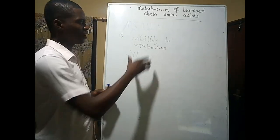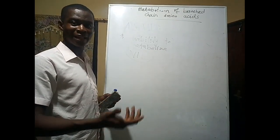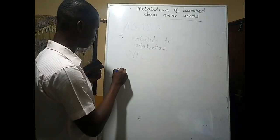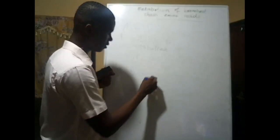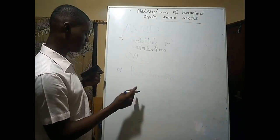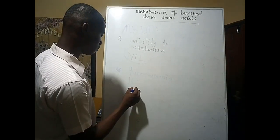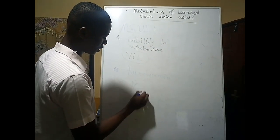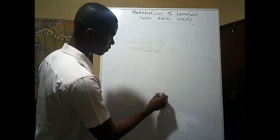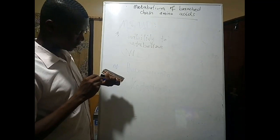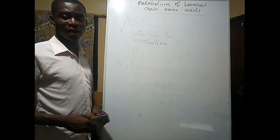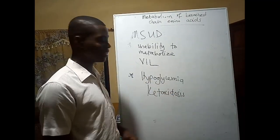Since these branching amino acids normally give us precursors that enter various pathways to generate energy, a person lacking this enzyme is likely to have hypoglycemia. Another important medical consequence is ketoacidosis — an accumulation of ketone bodies.